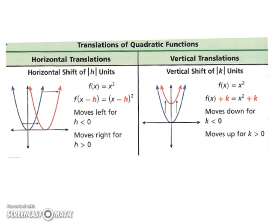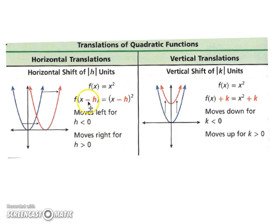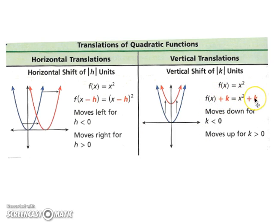Let's look at translations of quadratic functions. We have a horizontal translation (left and right) and a vertical translation (up and down). For horizontal translation, f(x - h) means x minus h squared. It moves left if h is less than 0, and moves right if h is greater than 0. Keep in mind the formula has a minus sign, so going left means a negative h, which appears as a plus in the equation — for example, x plus 5. For vertical shift, we add k to the function: x squared plus k. The graph moves down if k is less than 0, and up if k is greater than 0.